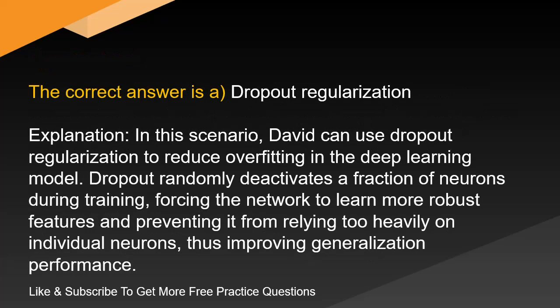The correct answer is A. Dropout regularization. In this scenario, David can use dropout regularization to reduce overfitting in the deep learning model. Dropout randomly deactivates a fraction of neurons during training, forcing the network to learn more robust features and preventing it from relying too heavily on individual neurons, thus improving generalization performance.